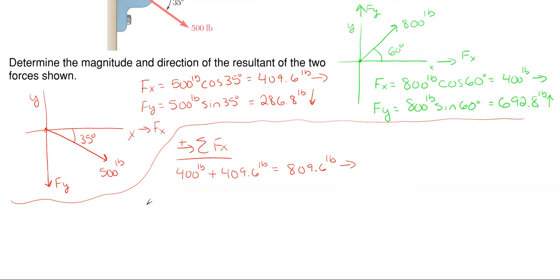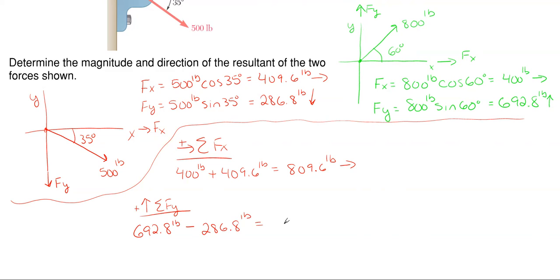We'll repeat that process for the y direction, taking up as positive and everything downward as a negative number. Our first y component is 692.8 pounds upward, so positive 692.8. For our second force we have 286.8 pounds downward, so minus 286.8 pounds. Tallying those two together we end up with 406 pounds, and since it's positive, it is going in the upward direction.